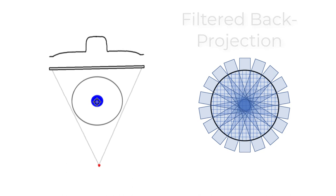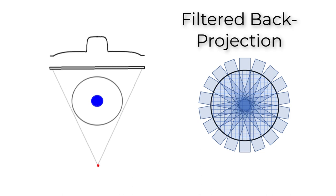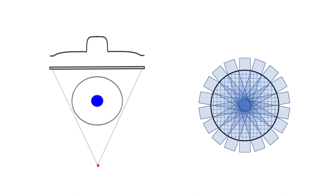We use an algorithm called filtered back projection. That means you filter the image first with a frequency filter before you do the back projection. You can show mathematically that if you do that, you get an exact representation. If I look at the image on the right, it's not quite an exact representation of the real geometry in the patient on the left, and part of that is because I'm using a cartoon here to illustrate.